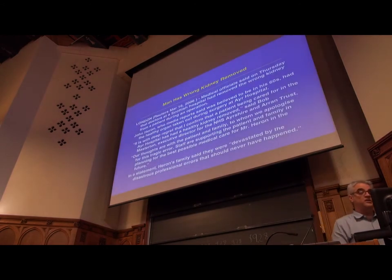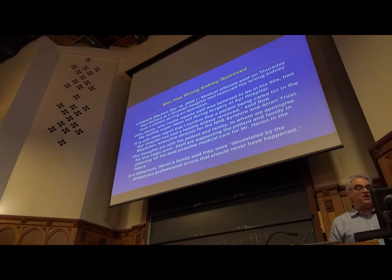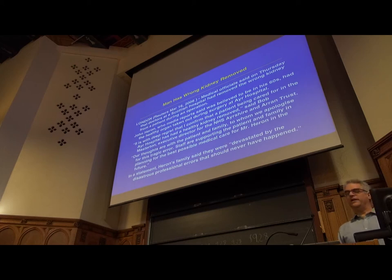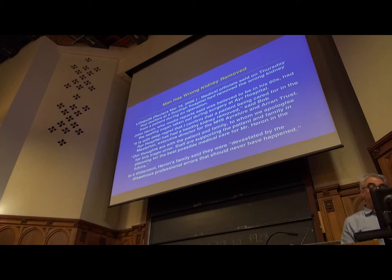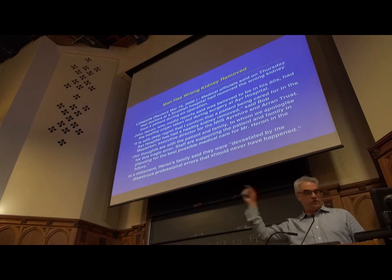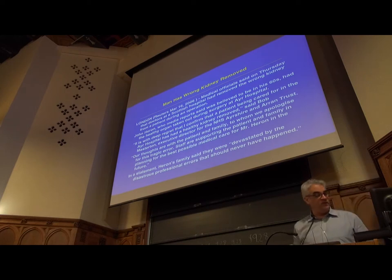Here's another typical case from London a few years ago. A medical official said on Thursday that doctors at a Scottish hospital had removed the wrong kidney from a patient during an operation. John Heron, who media reports said was believed to be in his 60s, had the healthy organ taken out during surgery at Ayr Hospital. Bob Masterson, executive director of the NHS Ayrshire Trust, said: It is with deep regret that I confirm that a patient had a healthy kidney removed. Our thoughts are with the patient and family to whom we apologize for this tragic error. Staff are supporting the patient and family in planning for the best possible medical care for Mr. Heron in the future. Heron's family said they were devastated by the disastrous professional errors that should never have happened.